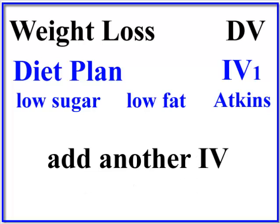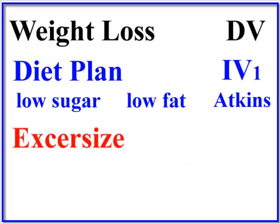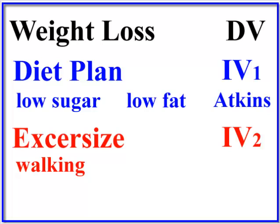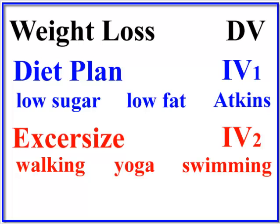But of course, we're going to add another IV — let's call it exercise. So this is IV2. This too has three separate groups. The first level is the exercise of walking, the second one is yoga, and the third one is swimming. So we have IV1 with three levels and IV2 with three levels.